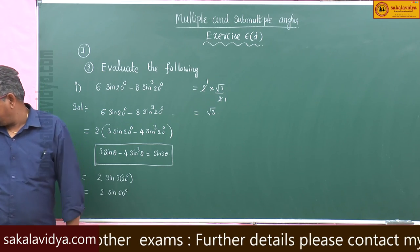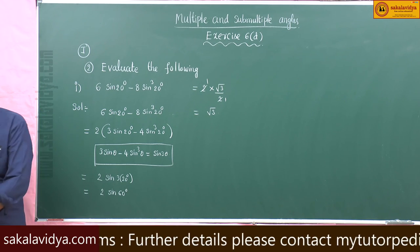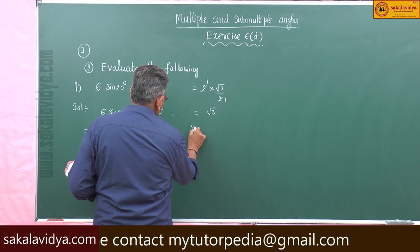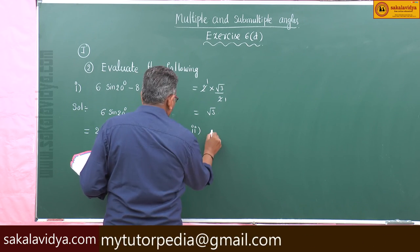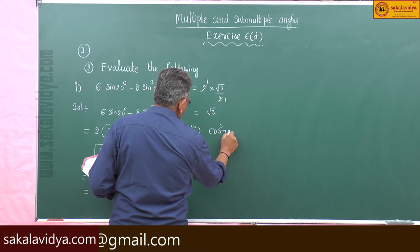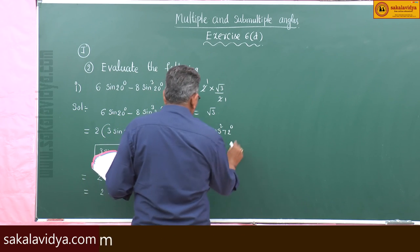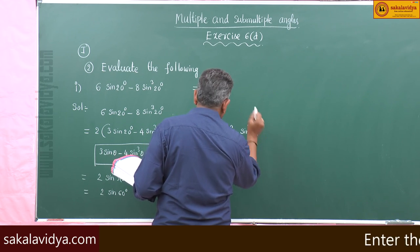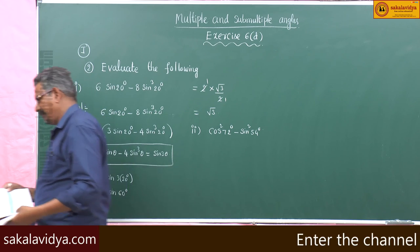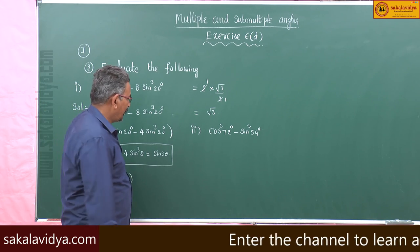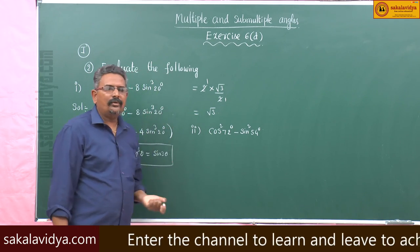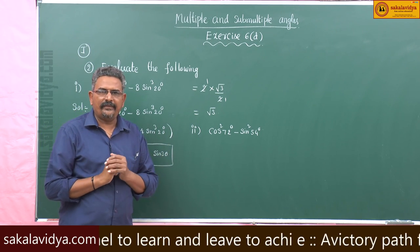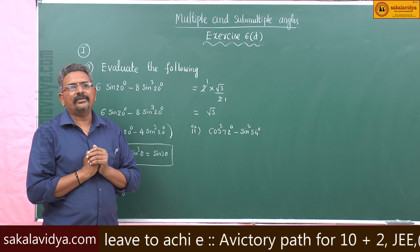Now let us go to the second simplification. The second one is cos square 72 degrees minus sin square 54 degrees. Let us have a brief discussion on how to find cos 72 and sin 54.